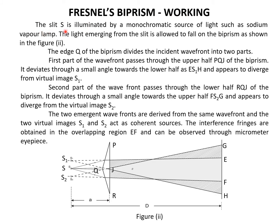Coming to working: the slit S is illuminated by a monochromatic source of light such as sodium vapor lamp. The light emerging from the slit is allowed to fall on the biprism as shown in this figure. The edge Q of the prism divides the incident wavefront. The light coming from the slit is in the form of wavefronts, and the vertex of the biprism divides the incident wavefront into two parts.